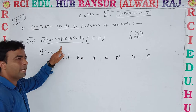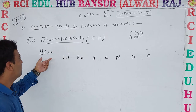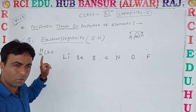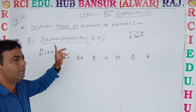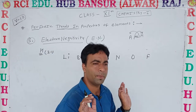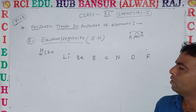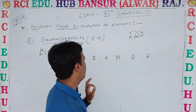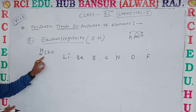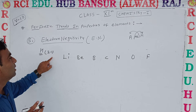Electronegativity का unit नहीं होता है, so it is a fixed value. ये fix होती है — हर element के लिए electronegativity क्या होती है, fix होती है, इसमें कोई change नहीं होता है। यानि एक quantitative value होती है। For example, hydrogen के लिए इसका value 2.1 है।